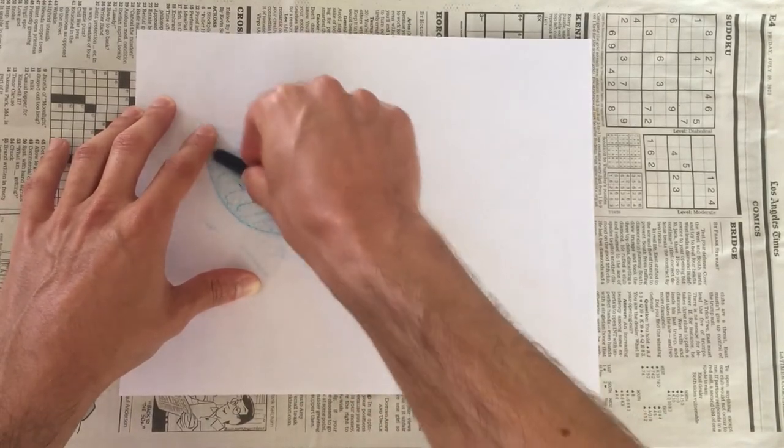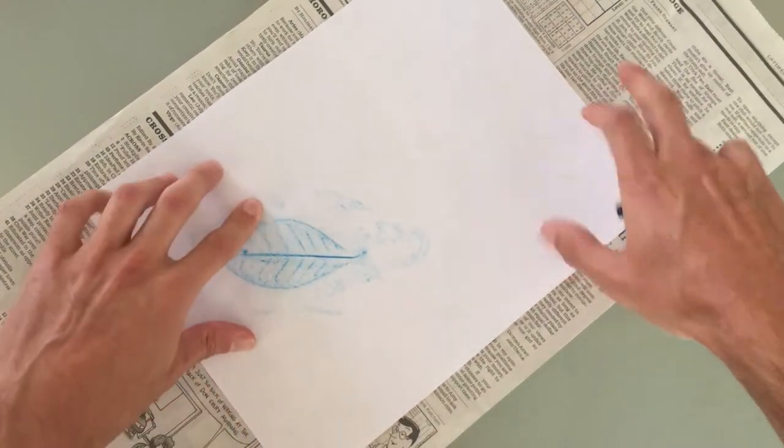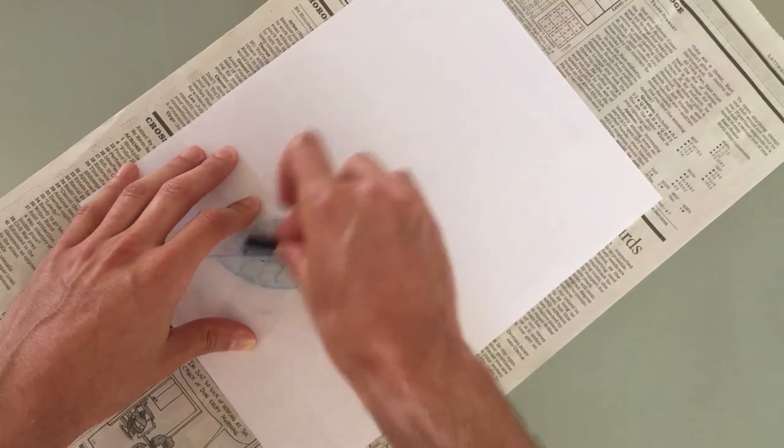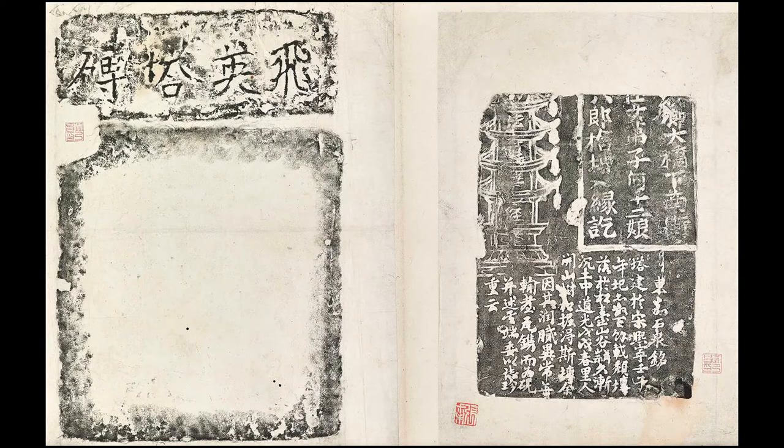Instead of rotating your canvas to get a better angle, try moving the scratch paper. This will ensure that the object under your canvas stays in the same spot. Sometimes, though, you can't move your object and you have to move your canvas.